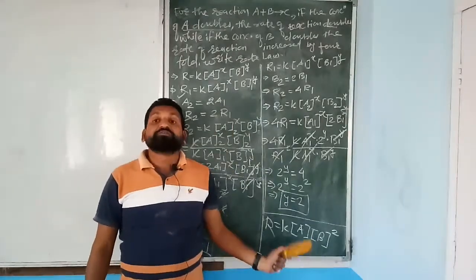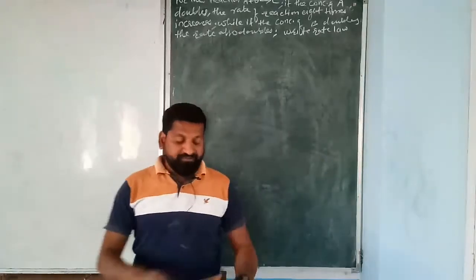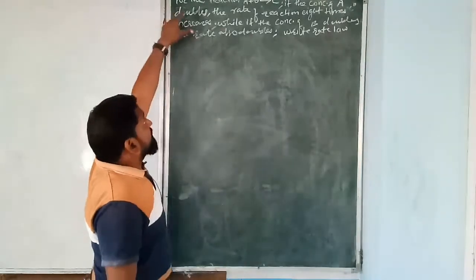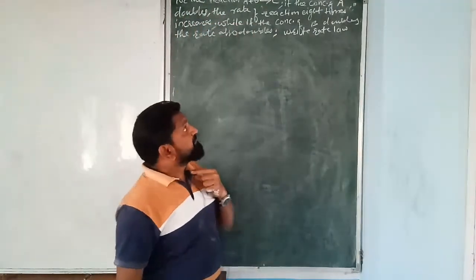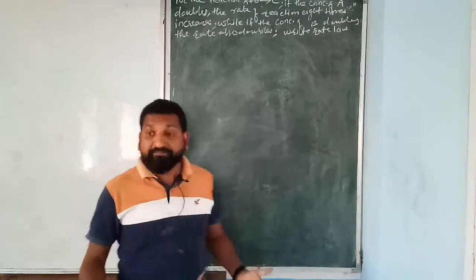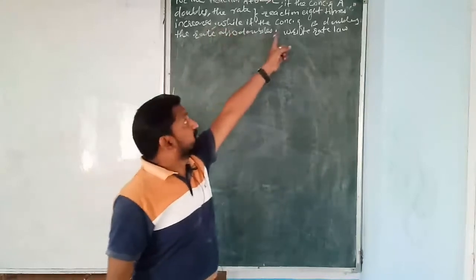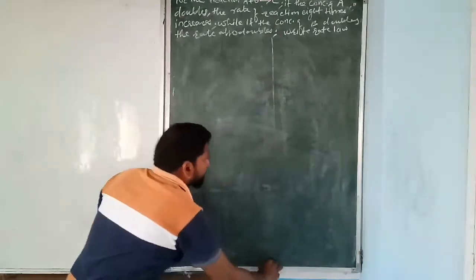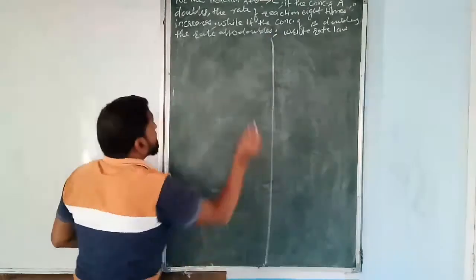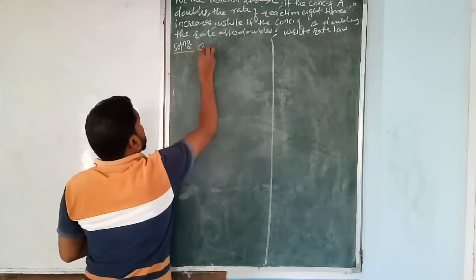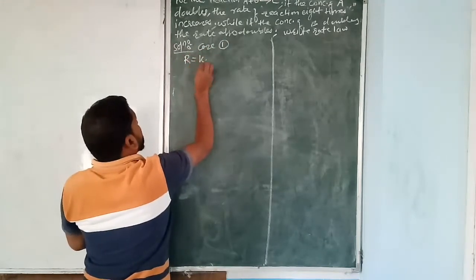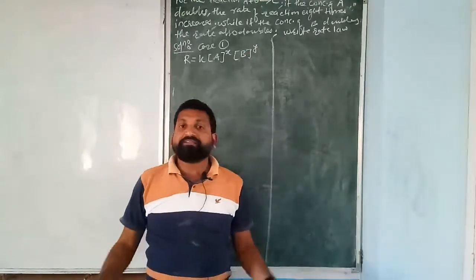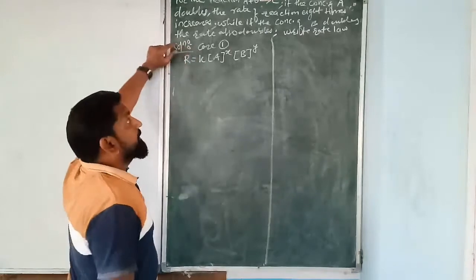Small question (c): what is the change in rate if the concentration of each reactant is tripled? A₂ = 3A₁ and B₂ = 3B₁. R₂/R₁ = k(3A₁)(3B₁) / (k[A₁][B₁]). K cancels, A₁ and B₁ cancel. We get R₂/R₁ = 3 × 3 = 9. Therefore R₂ = 9R₁ — rate increases 9 times.